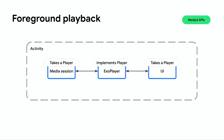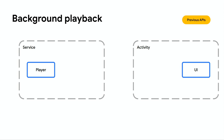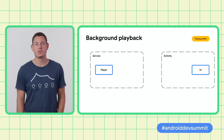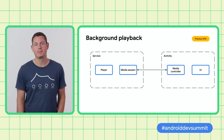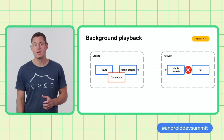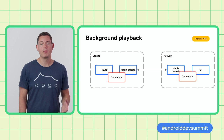The background playback case is slightly more complicated. The architecture is separated between a service, which contains the player, and an activity for the UI. The service creates a media session, which is used to advertise playback and pass commands to the player. And inside the activity, we create a media controller, which is used to communicate with the media session. As we saw already, the player can't talk directly to the media session, so needs a connector. Additionally, the media controller has its own player-like interface that's different from what the UI components expect, so that also needs a connector — adding complexity and making things error-prone.